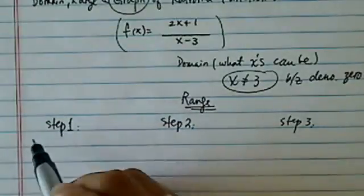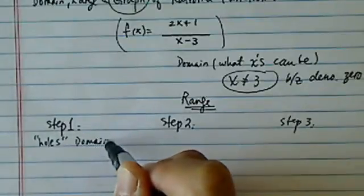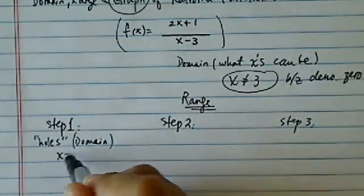Number one, you find the holes, which is, of course, our domain. So x cannot be equal to 3.